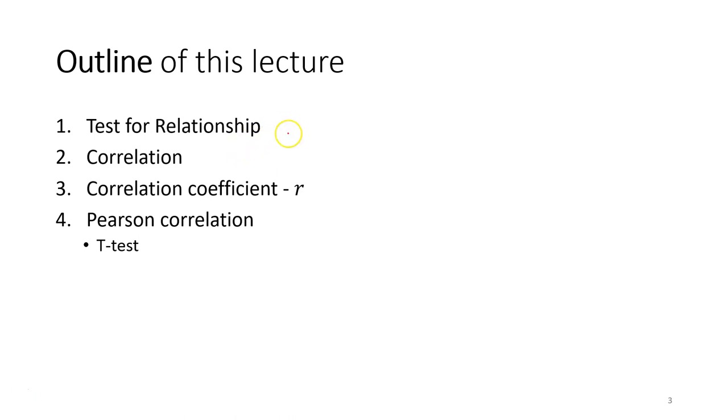There are a few topics. The first one is about the test of relationship. Correlation is just one of the analyses we use to investigate relationships. We're going to discuss how correlation indicates the relationship between two variables based on covariance. Then we're going to learn how to calculate the correlation coefficients and perform correlation analysis.